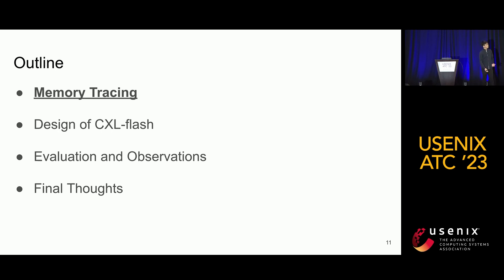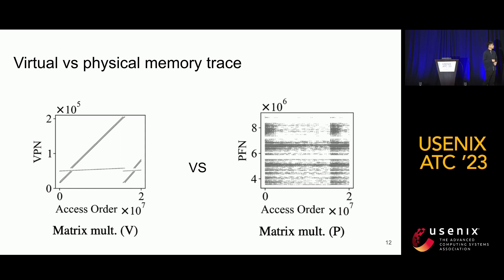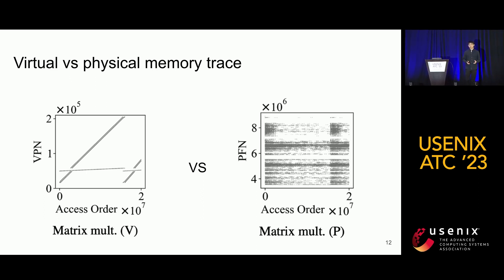Let's start with memory tracing. The figure here shows the access patterns for matrix multiplication as scatter plots, where each dot represents a host request. The X axis shows the access order and the Y axis shows the page number. The left-hand figure shows the virtual memory access pattern, while the right-hand one shows the physical memory access pattern. As you can see, the access patterns for the same application are very different. Since virtual and physical access patterns differ so much, it's important to focus on the physical ones, since that's what the device actually handles.